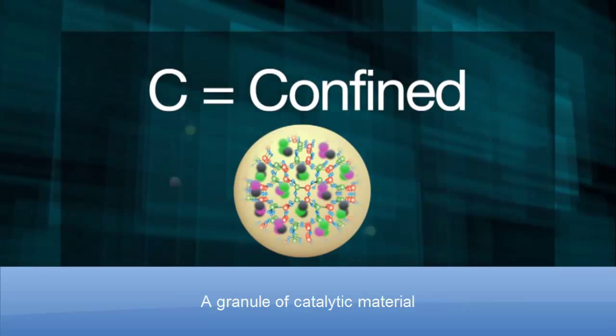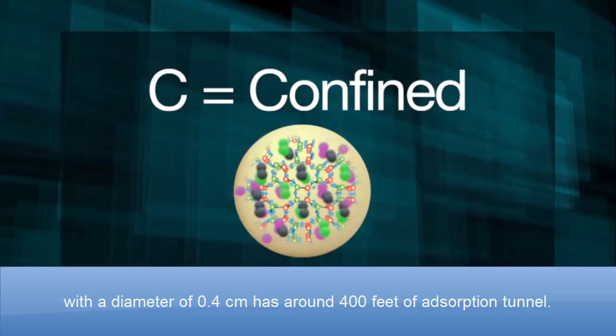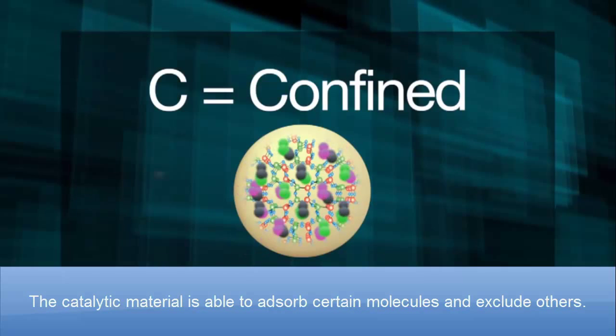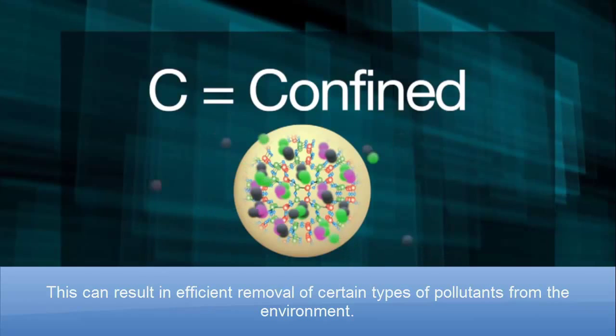A granule of catalytic material with a diameter of 0.4 centimeters has around 400 feet of adsorption tunnel. The catalytic material is able to absorb certain molecules and exclude others. This can result in efficient removal of certain types of pollutants from the environment.